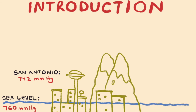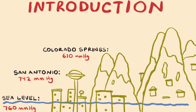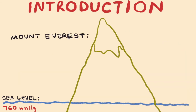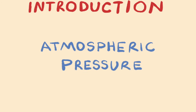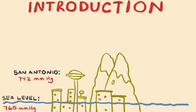At Colorado Springs, Colorado, atmospheric pressure is approximately 610 millimeters of mercury. At La Paz, Bolivia, the highest city in the world, it is 496 millimeters of mercury. At the top of Mount Everest, the highest point on earth, the atmospheric pressure is just 250 millimeters of mercury — no wonder why you can't breathe without an oxygen mask. The bottom line is that atmospheric pressure decreases as you increase in elevation or altitude.